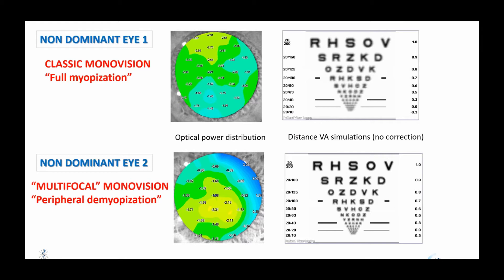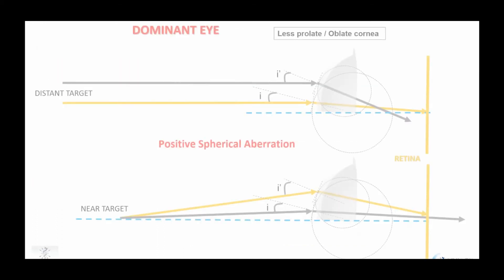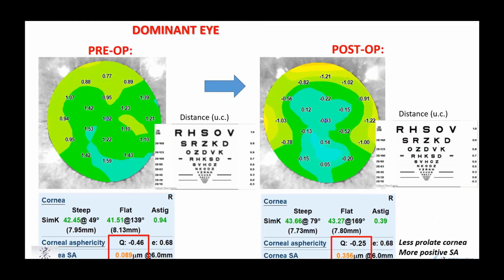The comparison between simulated retinal images for a distant target of two non-dominant eyes — obtained after classic monovision at the top and monovision with multifocality at the bottom — is eloquent. With regard to the dominant eye, a reverse strategy can be implemented. A less prolate or more oblate asphericity is induced to increase the positive spherical aberration, which gives the eye a peripheral myopic defocus capable of increasing the depth of focus. Here is an example of a global refractive map of a dominant eye: the refraction is emmetropic postoperatively, but the periphery is slightly myopic to extend the depth of field towards intermediate vision.